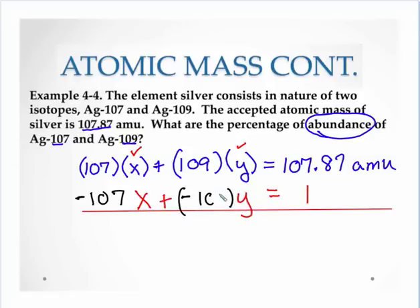As long as I multiply everything through by minus 107, I still have an equality maintained. Now I can add these two together, solving simultaneous equations.